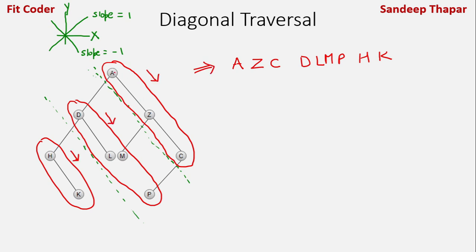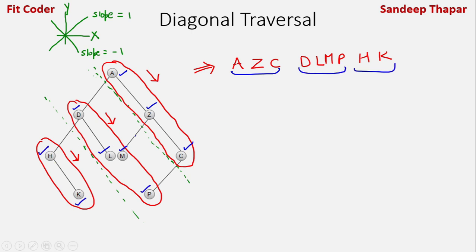We start from the root node, then we go along the first line: A, Z, C. Then the next line: D, L, M, P, and then the last: H and K. So given any binary tree, we have to find the diagonal traversal. Let's see the algorithm for that.